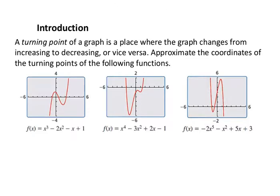How do we analyze the graph of a polynomial? One of the things we've noticed about polynomial functions is that they have bends in them. This first function is x to the third — you can see it bends twice. We've got an x to the fourth, a fourth-degree polynomial, and it bends three times. But here we've got a fifth-degree polynomial, and it really only appears to bend twice.